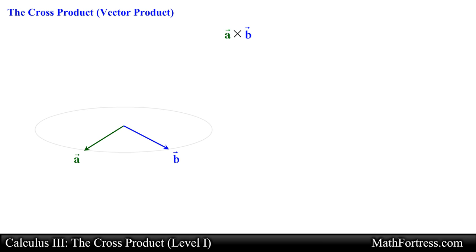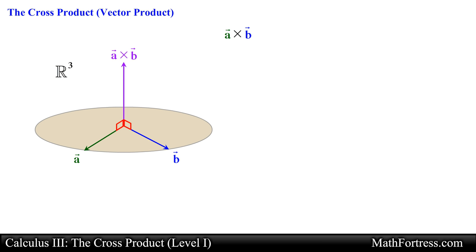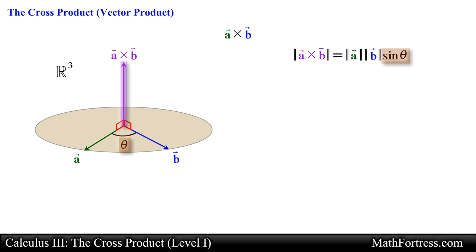With both vectors aligned at a common point, vector a and vector b will lie in a common plane. Since the cross product is defined for vectors in R³, we are dealing with three-dimensional vectors at all times. We define the cross product to be a vector with a direction perpendicular or normal to this plane, which is also perpendicular to both vector a and vector b. The magnitude of this third vector is equal to the product of the magnitudes of vector a and vector b times the sine of the angle theta between them.